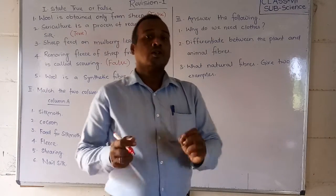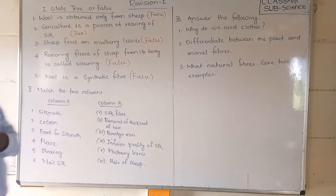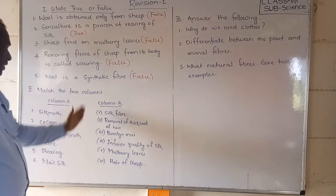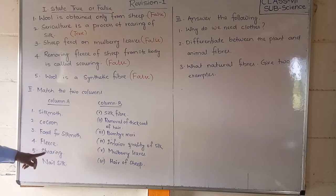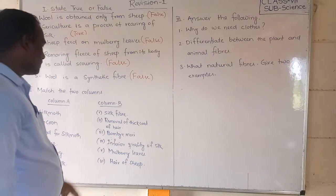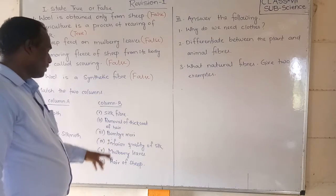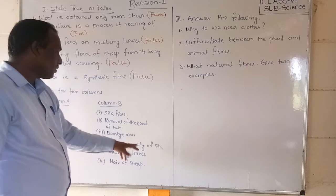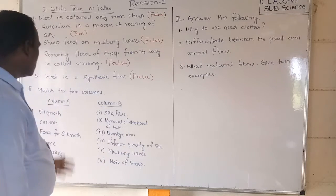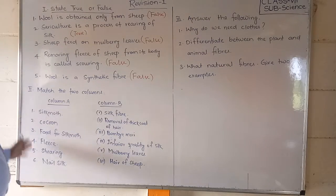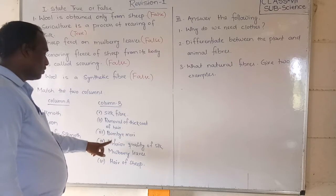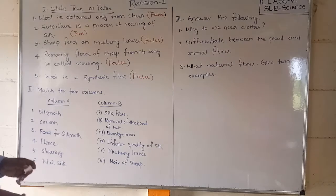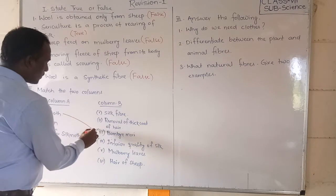Now we have the match-the-column exercise. Column A has: silk moth, cocoon, food for silk moth, fleece, shearing, and pashmina. Column B has: silk fiber, removal of thick coat of hair, Bombyx mori, inferior quality of silk, mulberry leaves, and hair of sheep. Let us start matching. Silk moth — the other name for silk moth is Bombyx mori, so we match silk moth with Bombyx mori.